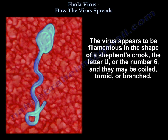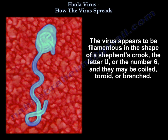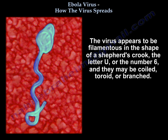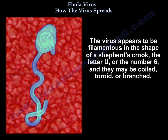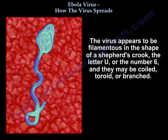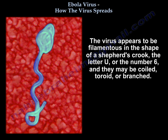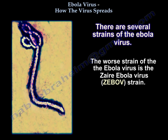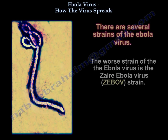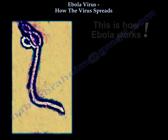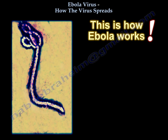The virus appears filamentous in the shape of a shepherd's crook, the letter U, or the number six, and may be coiled, toroid, or branched. There are several strains of the Ebola virus; the worst strain is the Zaire Ebola virus strain. This is how Ebola works.